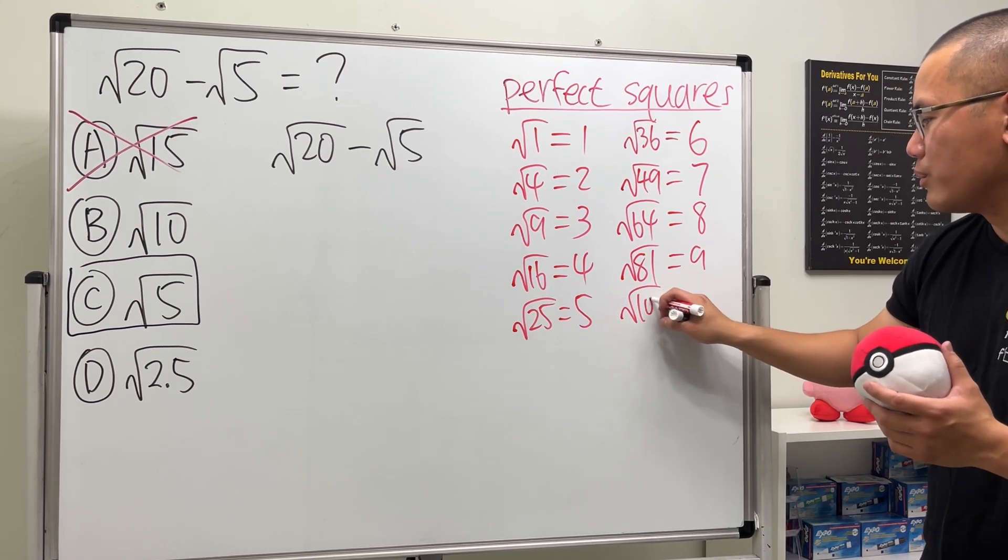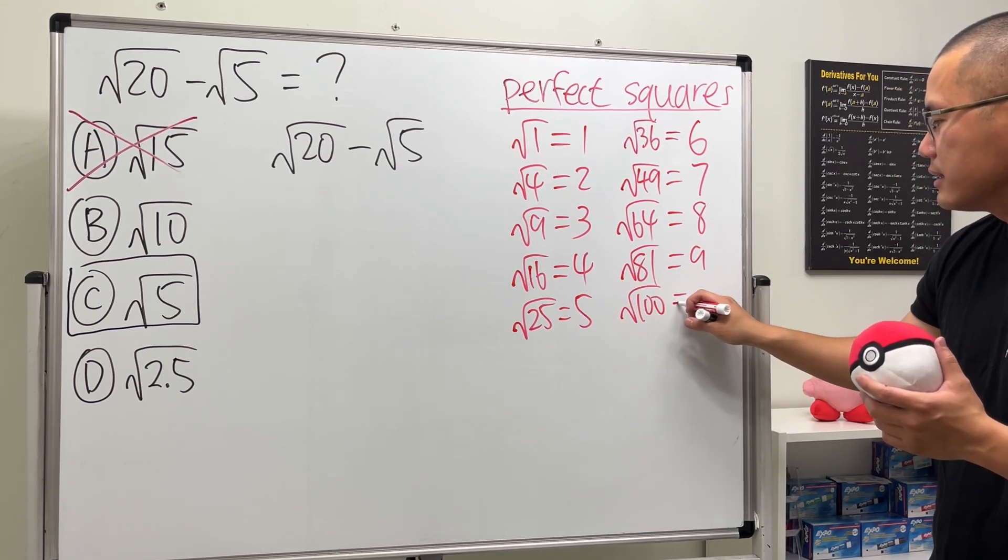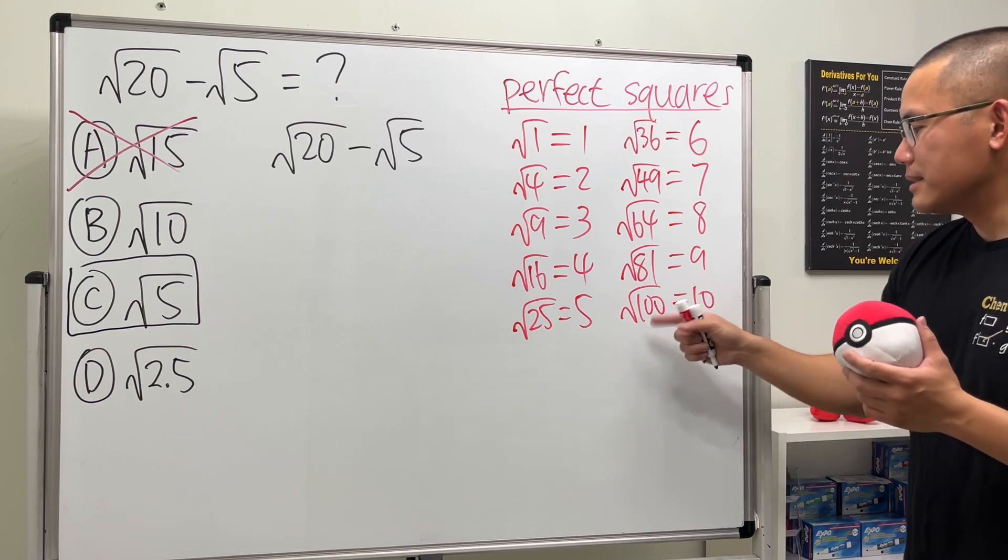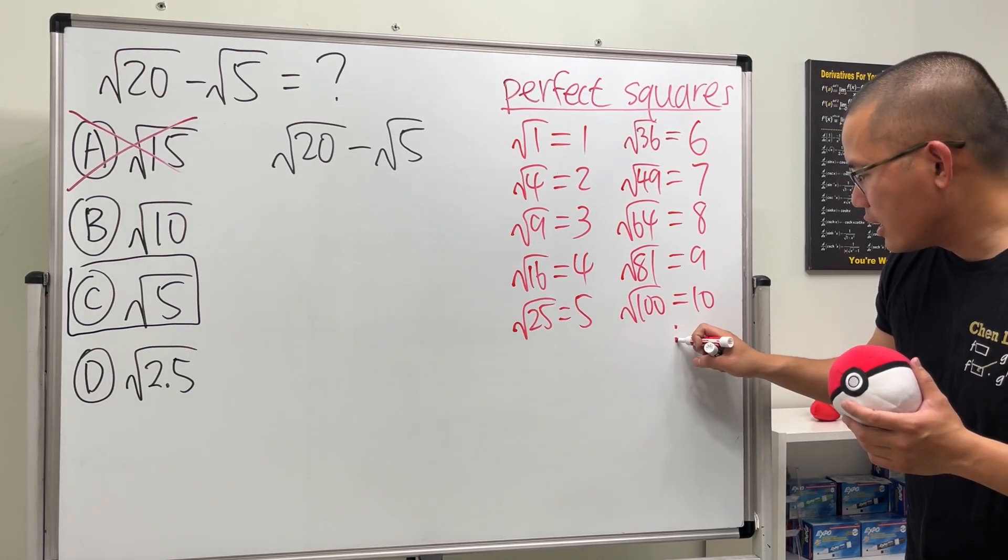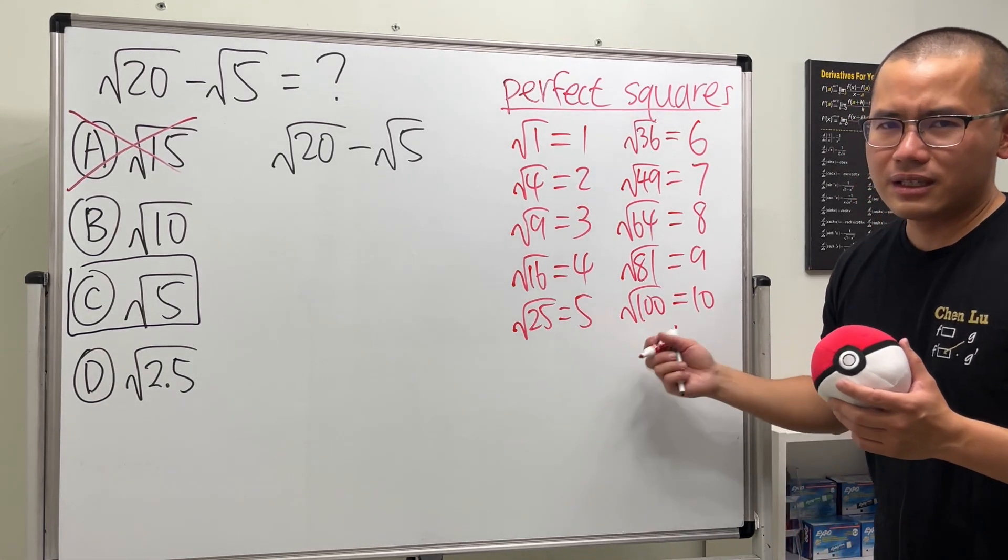And the next one is 81. That will give you 9. And, of course, let's just put on one more. The last one that we have right here is 10. 10 times 10 is 100. And, of course, this right here keeps on going on forever. But these are the first 10.